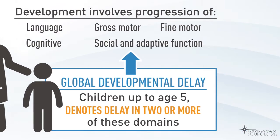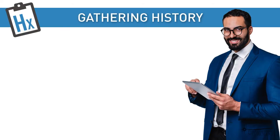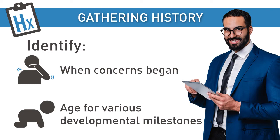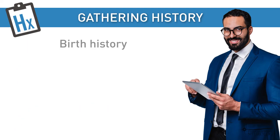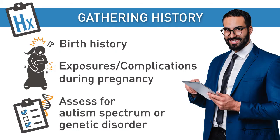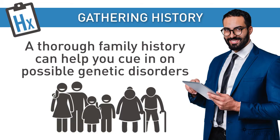When assessing a child for developmental delay, there are a few historical questions to ask. First, identify when the child's parents or guardians first became concerned, and at what ages the child achieved various developmental milestones. Ask about birth history and possible exposures or complications during pregnancy. Assess for any features suggestive of autism spectrum disorder or a genetic disorder. A thorough family history can also help cue in on possible genetic disorders.